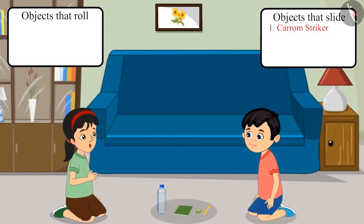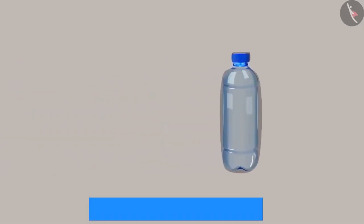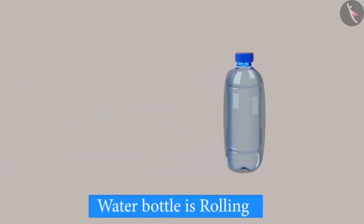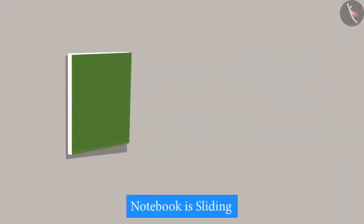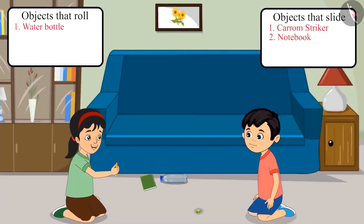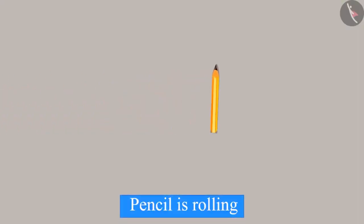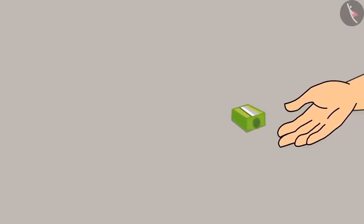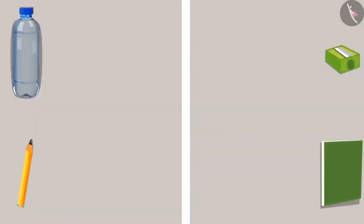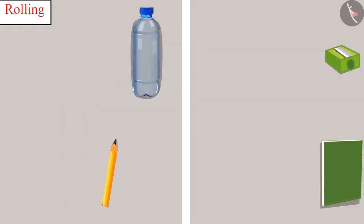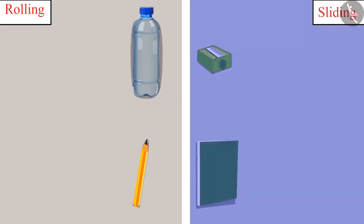Chotu and Pinky start pushing objects one by one on the floor. The water bottle rolls. The notebook slides. The pencil rolls and continuously keeps rolling. The sharpener slides. Pinky concludes that all objects whose surfaces are circular are rolling, and objects whose surfaces are not circular are sliding.